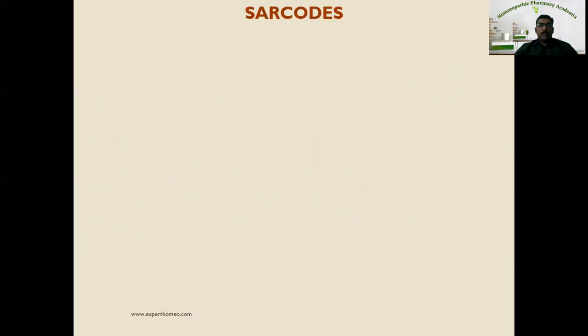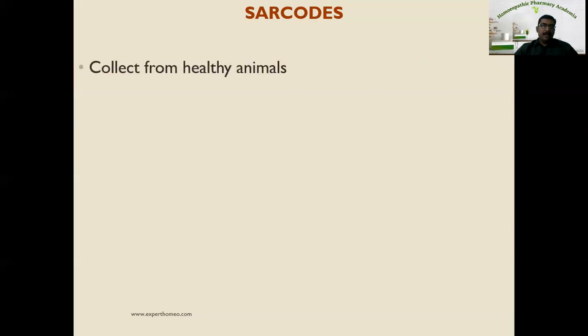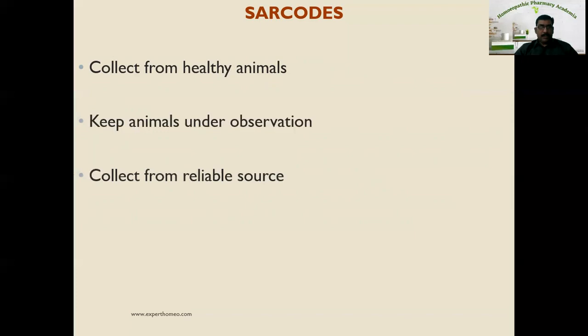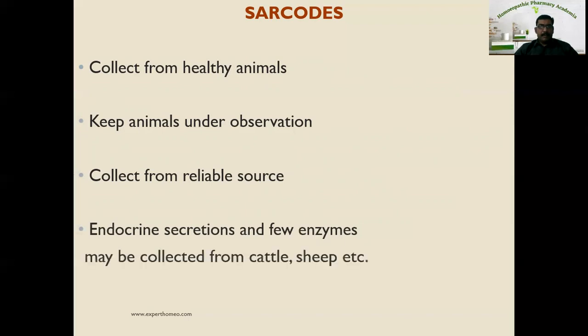Sarcodes are prepared from healthy organs, healthy secretions, or healthy endocrine or exocrine glands and their secretions. They should be collected from apparently healthy animals kept under observation before collection. Collect from reliable sources with enough knowledge of the correct species. Endocrine secretions and some enzymes may be collected from cattle, sheep, etc., at slaughterhouses.